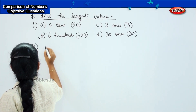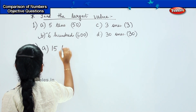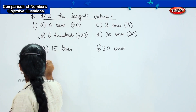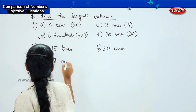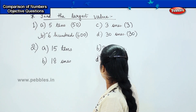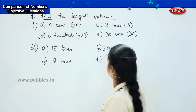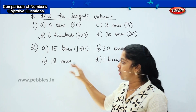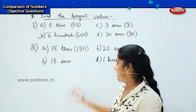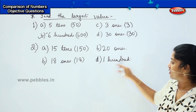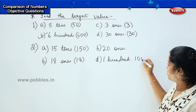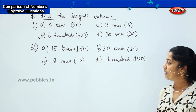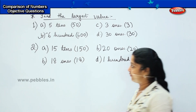Here is the next question: find the largest number from 15 tens, 18 ones, 100, and 20 ones. 15 tens is 150. 18 ones is 18. 100 is 100. 20 ones is 20. Now tell me which is the largest number. Yes — option A, 150. Correct.